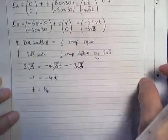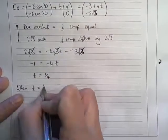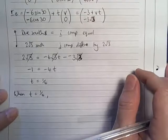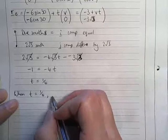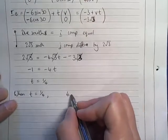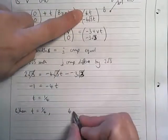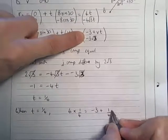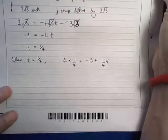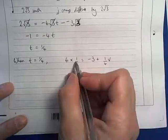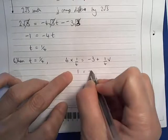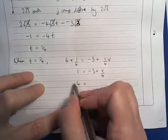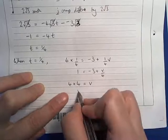Now, when T is one quarter, let's have a look at what's happening to the I components. I know that the I components are equal at this time, so I know that 4 times a quarter equals negative 3 plus a quarter of V. So here I end up with 1 equals negative 3 plus V over 4, so I shall add 3 to both sides and multiply both sides by 4, so I end up with V is 16.